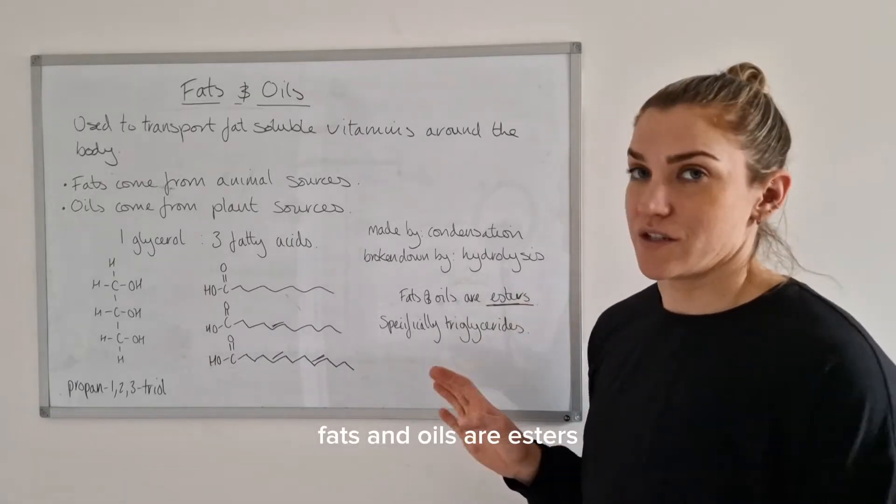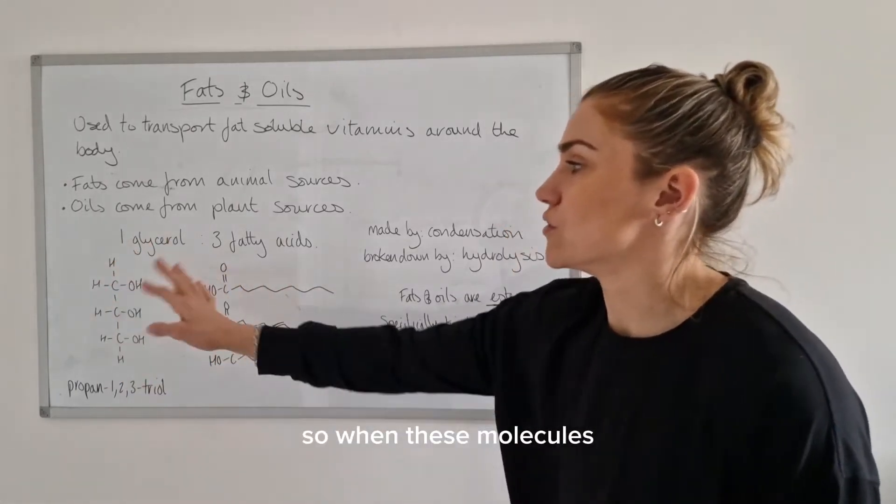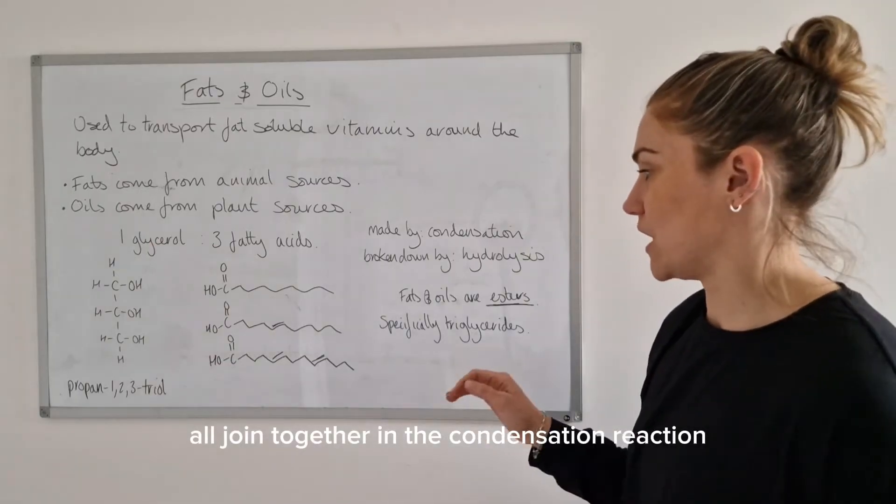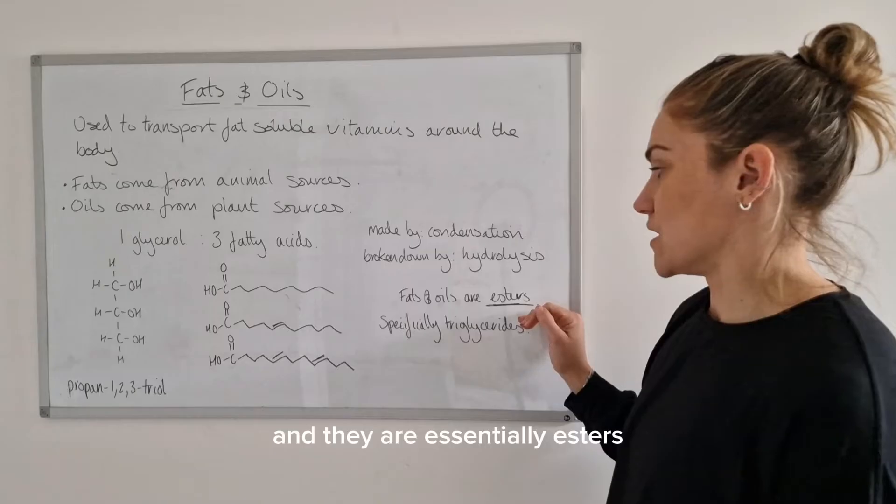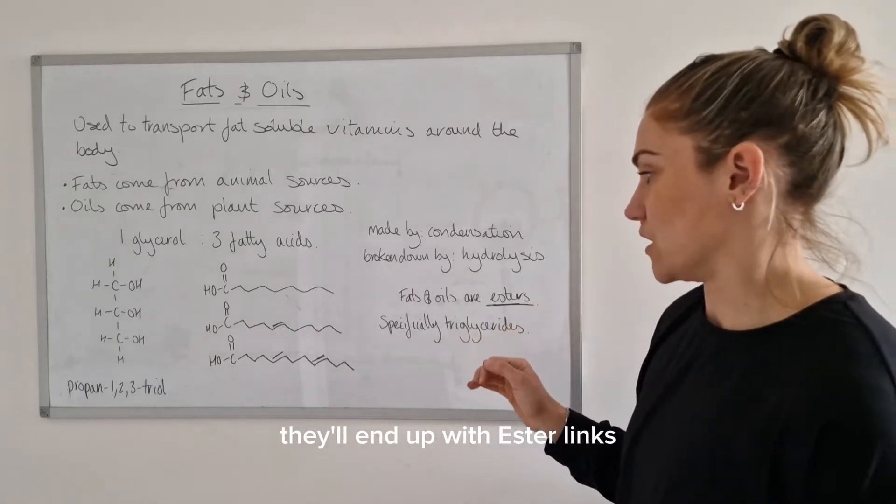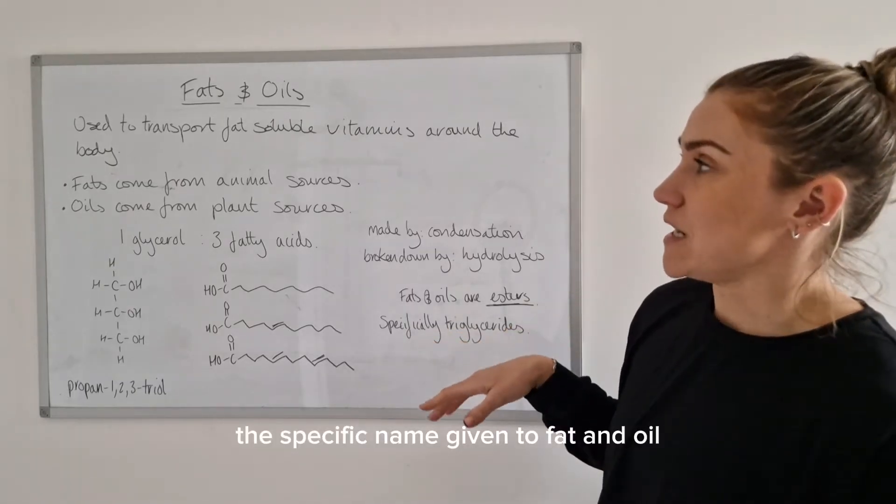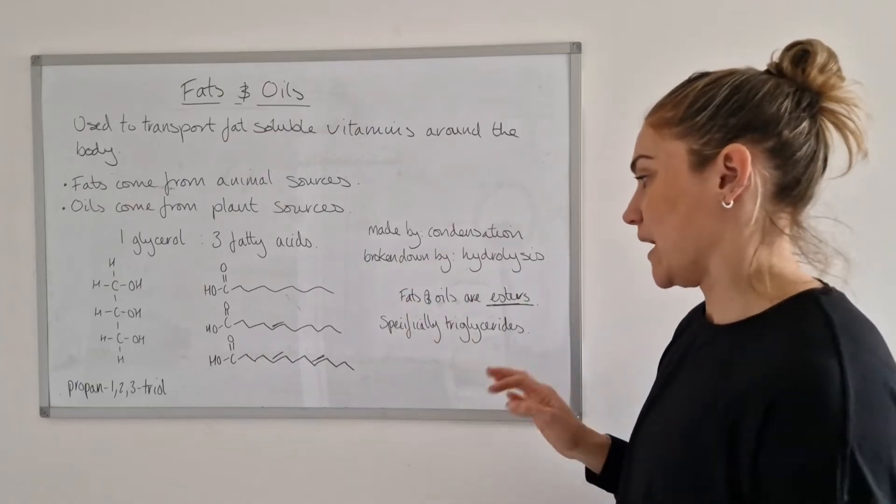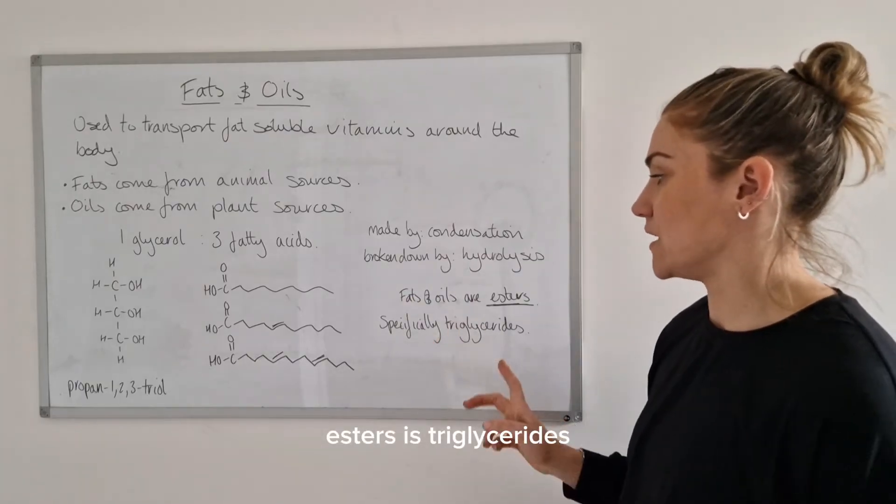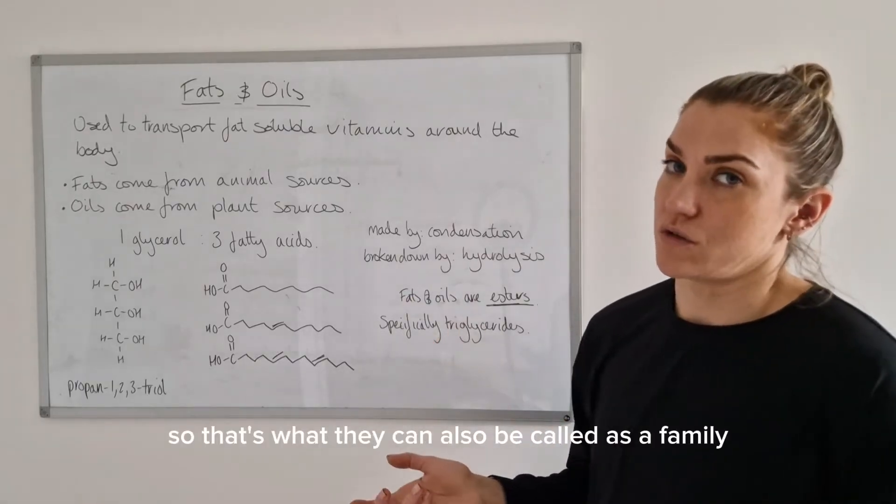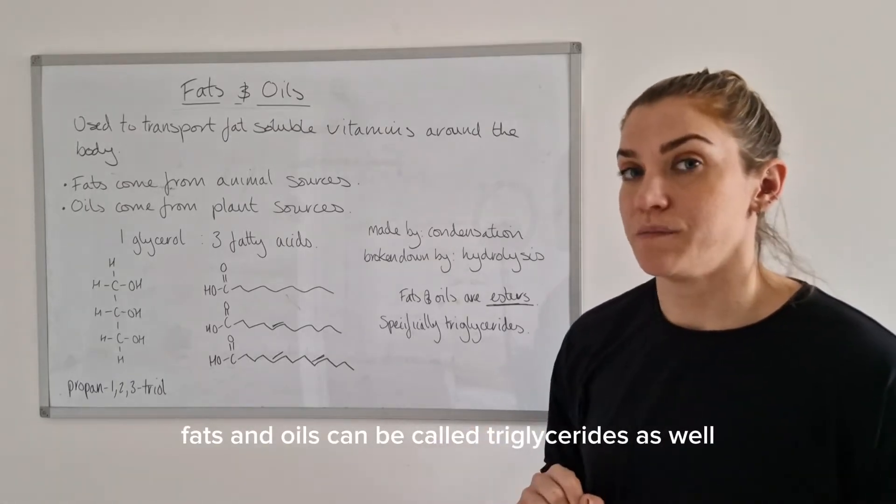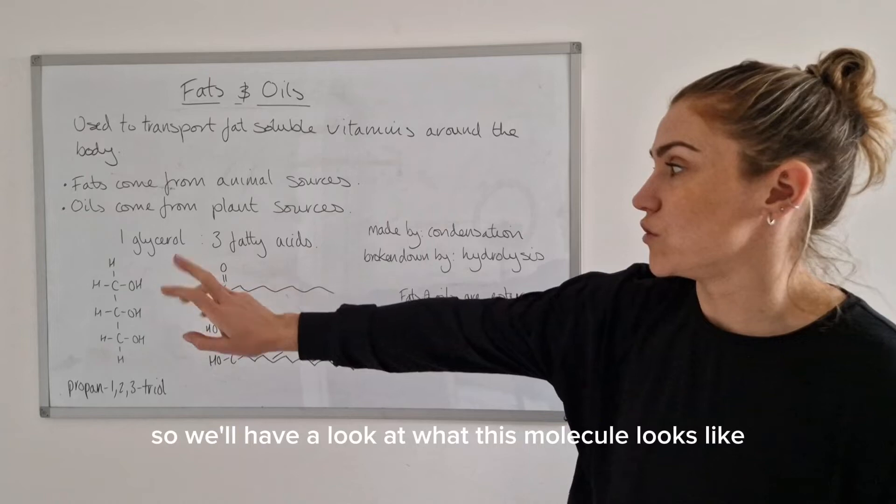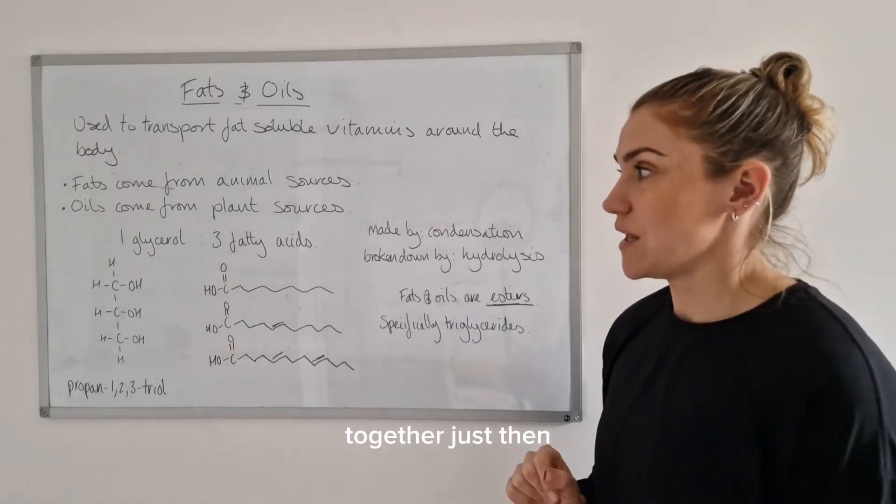Fats and oils are esters. When these molecules all join together in the condensation reaction they'll make a fat or an oil, and they are essentially esters that'll end up with ester links. The specific name given to fat and oil esters is triglycerides. That's what they can also be called as a family. We'll have a look at what this molecule looks like once it's actually all joined together.